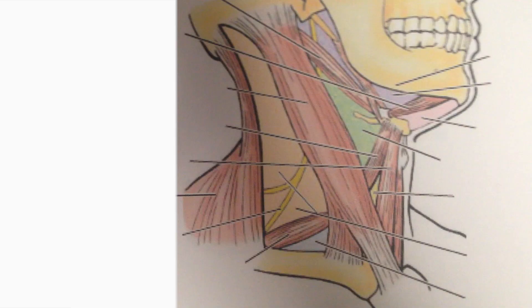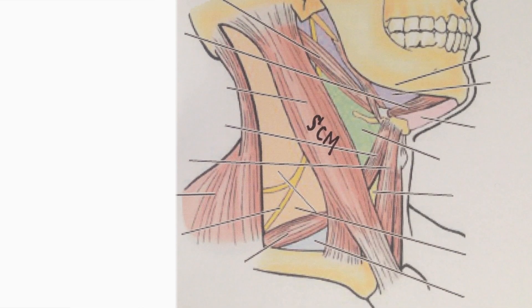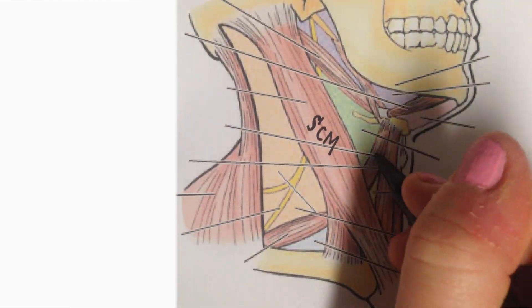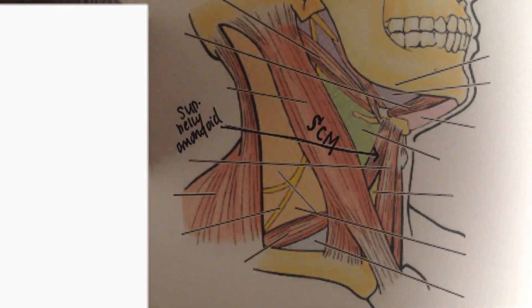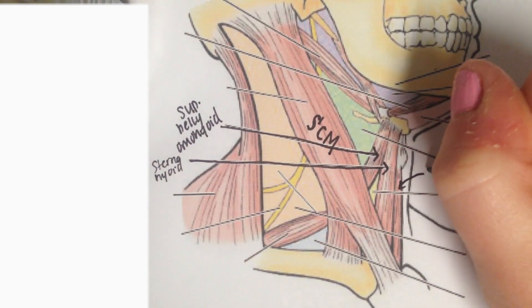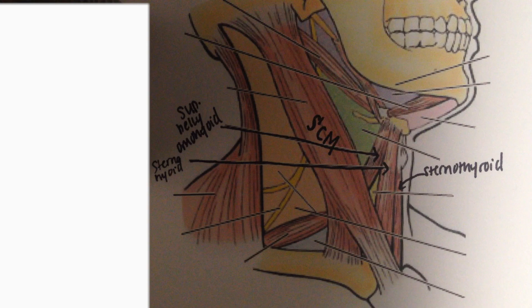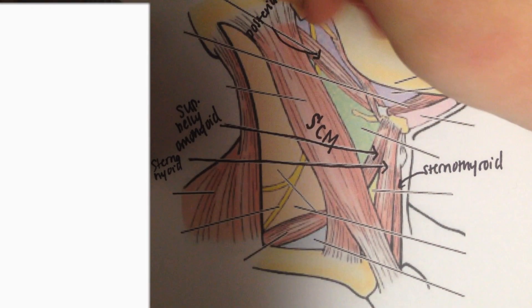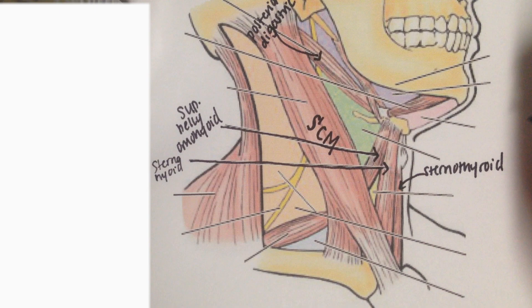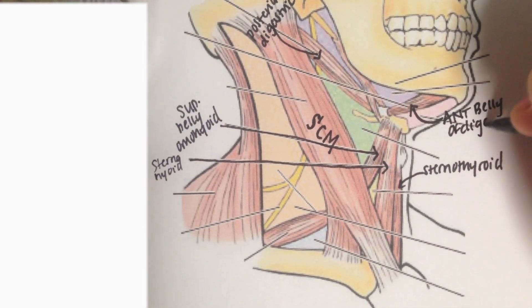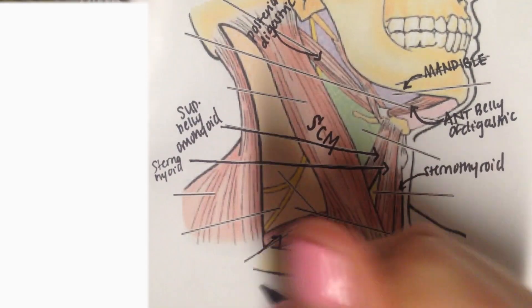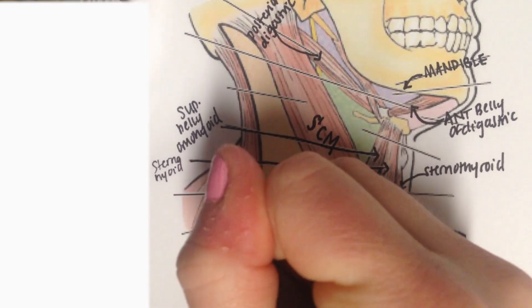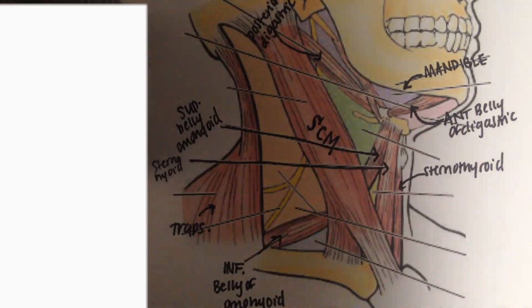We're just going to draw what each of these look like and start labeling some muscles. First we have our sternocleidomastoid muscle right in the middle on the lateral neck view. This is our superior belly of our omohyoid, right to the anterior portion of the sternocleidomastoid. Then we have our sternohyoid muscle, and we're going to label our sternothyroid. Up here we have our posterior belly of our digastric, and here we're going to have our anterior belly of our digastric muscle, and of course the mandible. Then we're going to have our inferior belly of our omohyoid. Our trapezius is here, just so we get an idea of what's going on.